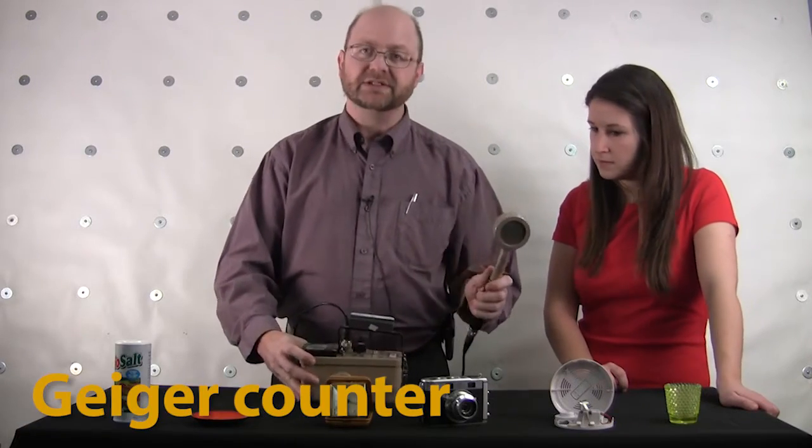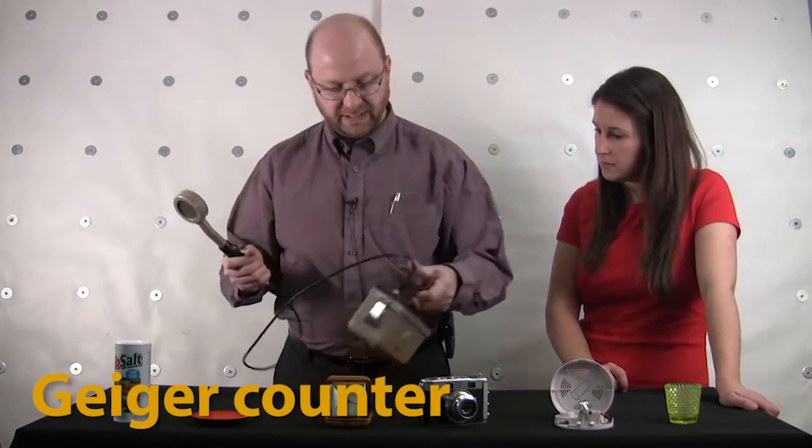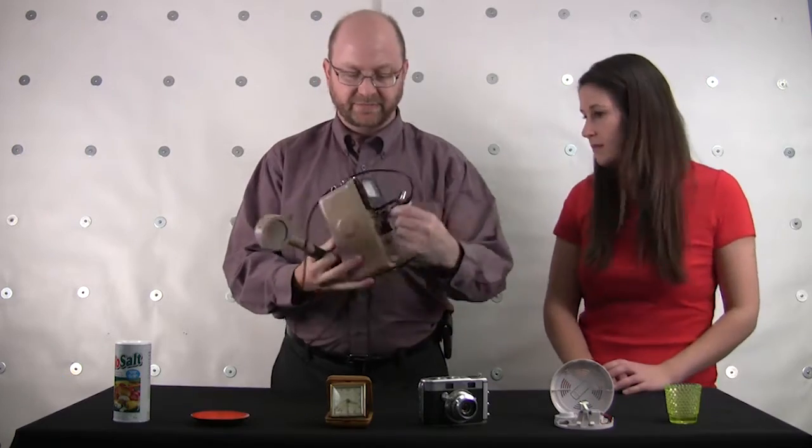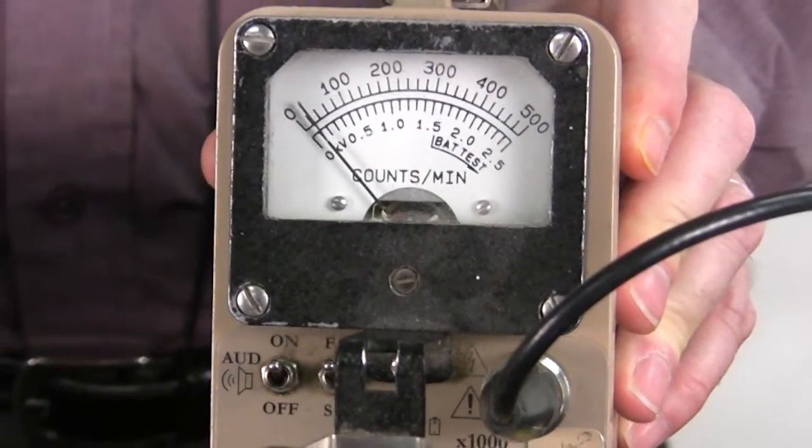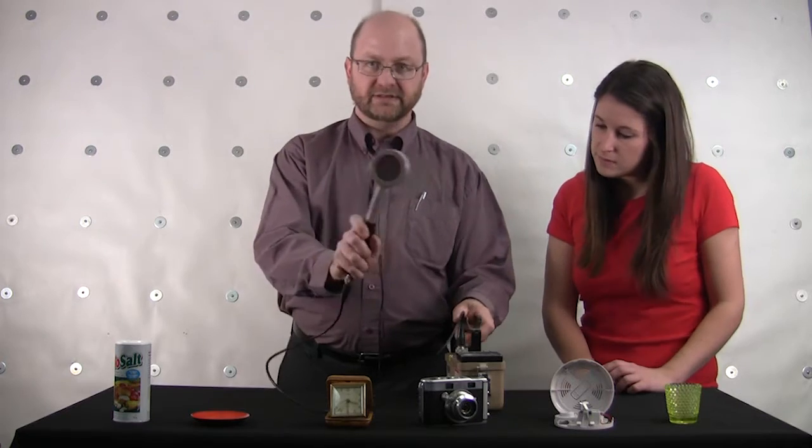The Geiger counter is a device for measuring radiation. It's simply a power source, a big battery, and a meter on the top which shows you the radiation level and the detector itself.